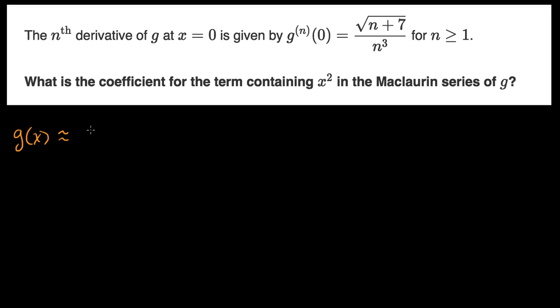Well, it's going to be equal to g of zero plus g prime of zero times x plus g double prime of zero divided by two factorial, but that's just two, times x squared.